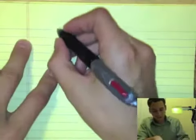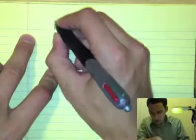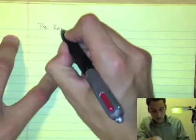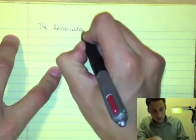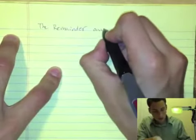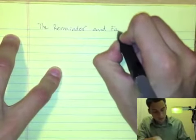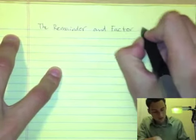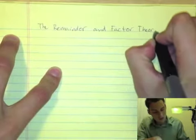This section is called the Remainder and Factor Theorem.